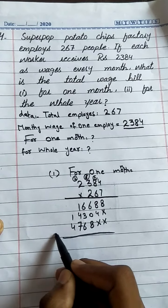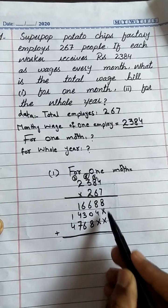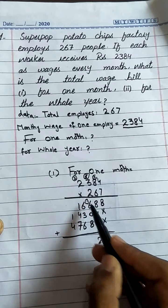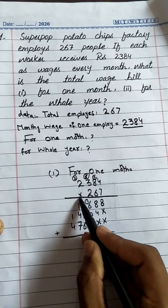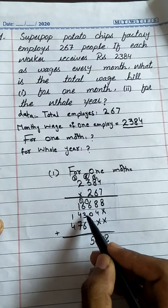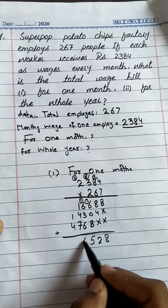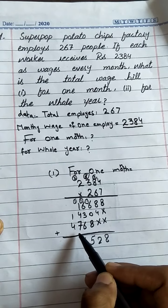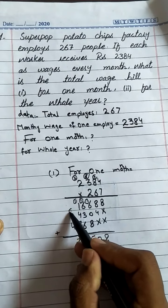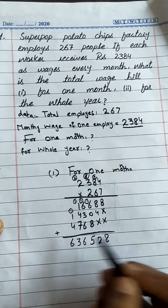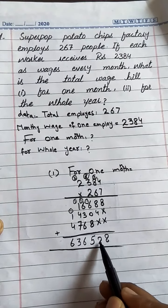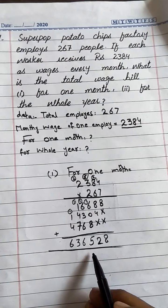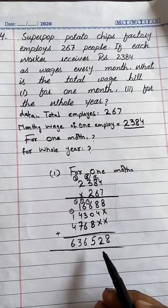Now add all the partial products. 8; 8 + 4 = 12, write 2 carry 1; 6 + 0 + 1 = 7; 7 + 8 = 15, write 5 carry 1; 6 + 3 + 4 + 1 = 16 — wait, adding up: 1 + 2 + 4 + 6 + 7 = 13 here and there, giving us wages for 1 month = 636,528.